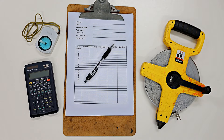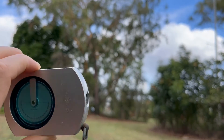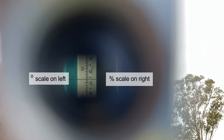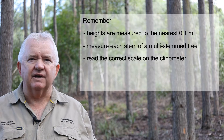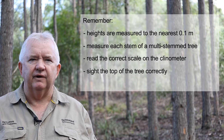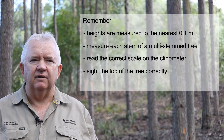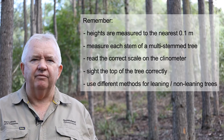In the farm forestry situation, tree height can be measured fairly accurately using some basic inexpensive equipment: a clinometer or clinometer app on a smartphone, a 50 metre measuring tape, data recording sheets or a tablet or smartphone, and a scientific calculator. A clinometer or smartphone app will measure slopes in either percent or degrees. These measurements can be used to calculate tree height using trigonometry when the horizontal distance from the tree is known. When measuring tree height, total heights are measured to the nearest tenth of a metre, each stem of a multi-stem tree should be measured, take care to read the correct scale either percent or degrees, and ensure you are sighting the top of the tree. You may need to walk further away from the tree to get a better view or wait until the tree stops moving if it is windy. When measuring leaning trees greater than 20 degrees, there is a different procedure than for non-leaning trees.